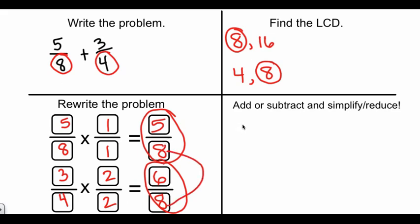Let's rewrite our problem with our new denominators. We have 5/8 plus 6/8. Just like we talked about in other videos, the whole is always going to stay the same. With fractions, the denominators stay the same. Here's where the adding part comes in - we add the numerators together. So 5 plus 6 is 11.